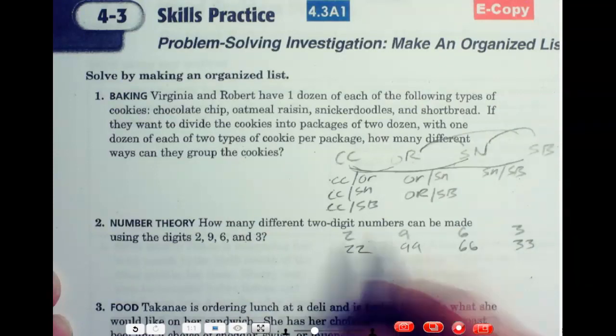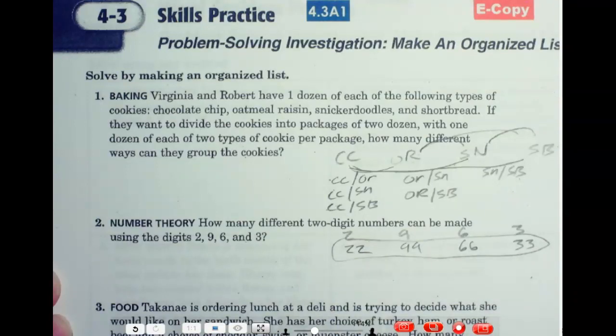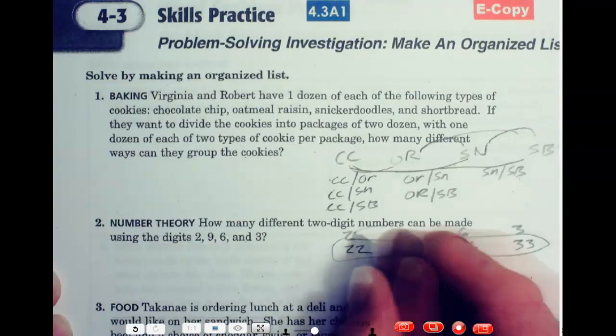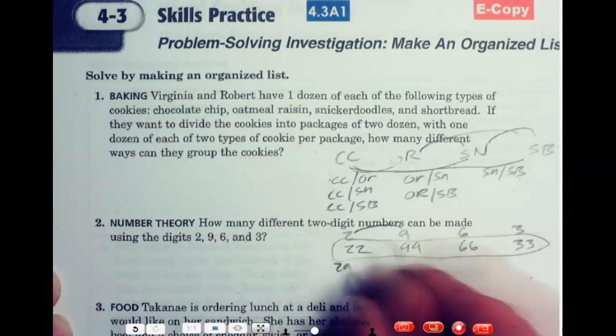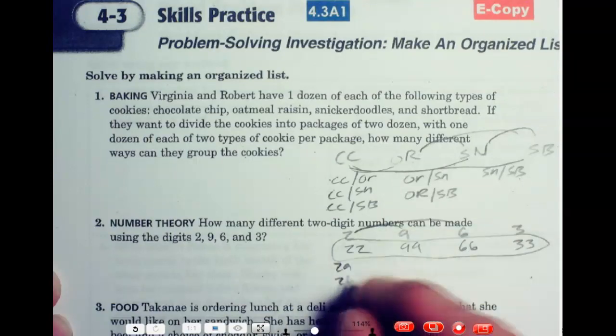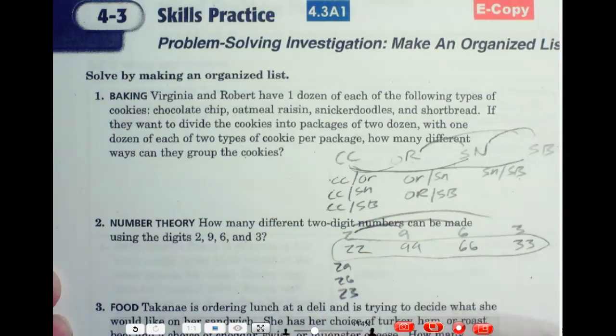And I think these are the four that the book is going to say that there's four less answers. But I'm just a little more clever than the book. So, then I do the same thing. I could have 29. I could have 26. I could have 23.